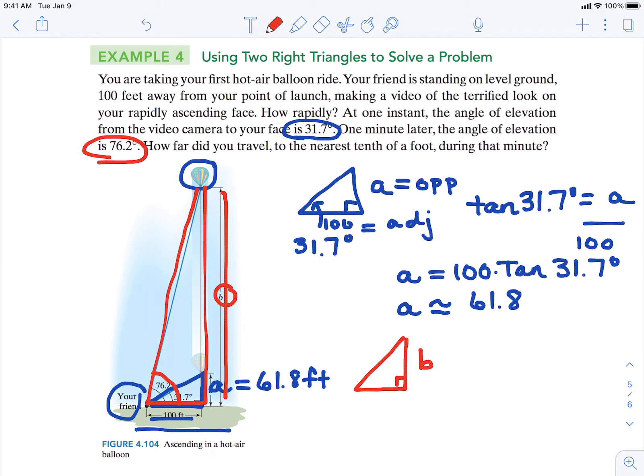That's your height B. Here is your angle of elevation of 76.2 degrees. And then that same distance of 100 feet.